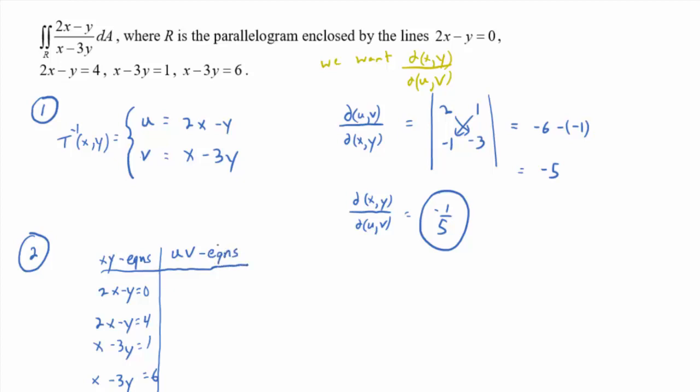And these are, again, these are boundary equations. So it's really easy to transform it. So this is easier than the last problem, whereas part one, step one, was harder than the last problem. So 2x - y = 0, that's the same as saying u = 0, right? 2x - y = 4, u = 4. x - 3y = 1 is the same as saying v = 1. x - 3y = 6 is the same as saying v = 6.